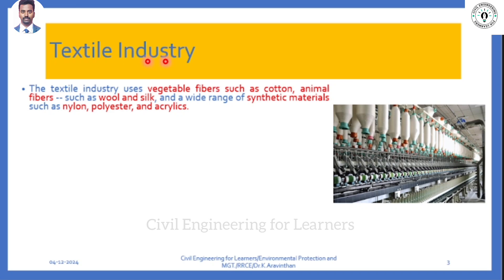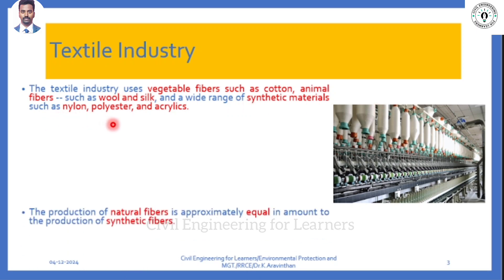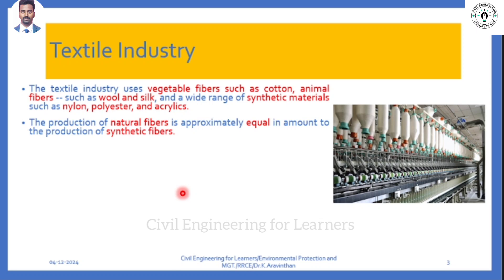The textile industry not only uses plant material - those are called cotton. They use animal fiber also, called wool and silk. They also use synthetic materials such as nylon, polyester, and acrylics. Natural fiber makes up half of the material the textile industry uses, and synthetic material makes up the other half. So equally, natural and artificial materials are used in textile industry.